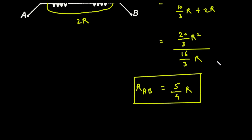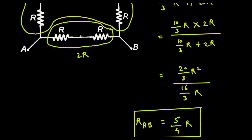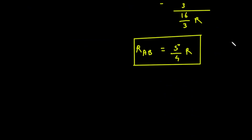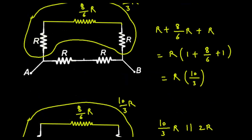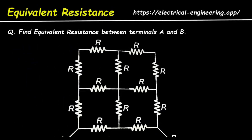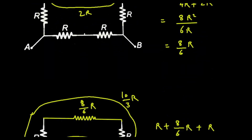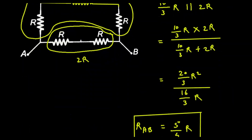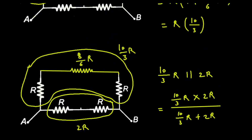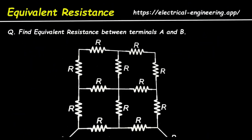Therefore, the equivalent resistance between A and B will be 5/4 R. This is how we can solve these types of networks. Don't forget to like, share, and subscribe to this channel — thanks for watching.